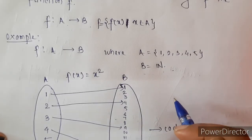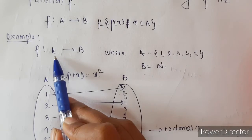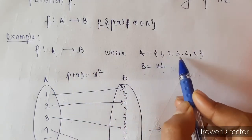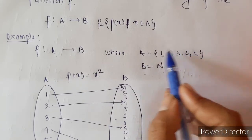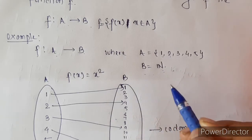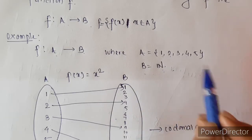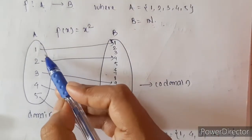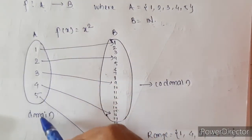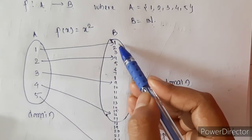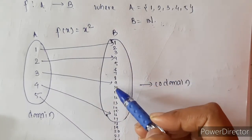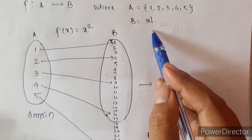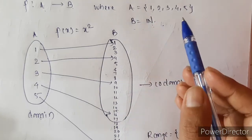Let's take this example. We have a function f going from A to B, where A = {1, 2, 3, 4, 5} — so 5 elements in set A — and set B is the set of all natural numbers, so we have infinite elements in set B. And f(x) is given as x squared. So A = {1, 2, 3, 4, 5} is the domain of the function, and B is the co-domain of the function.